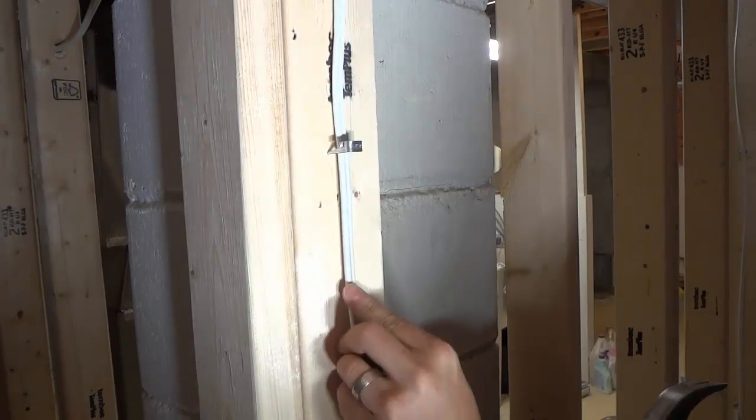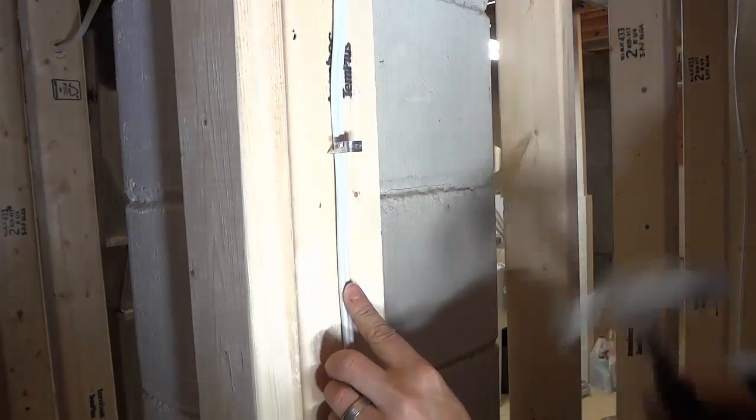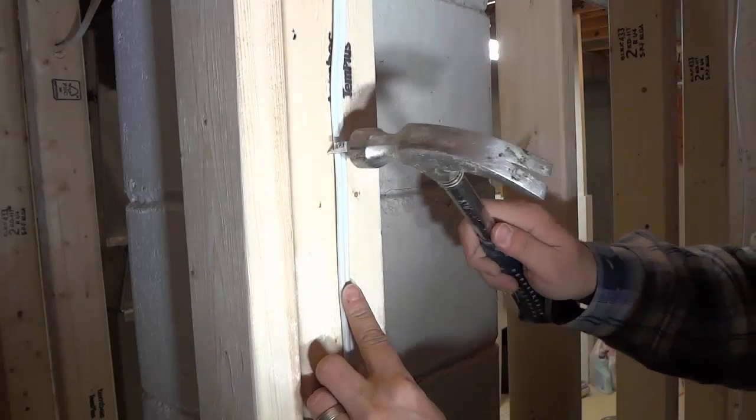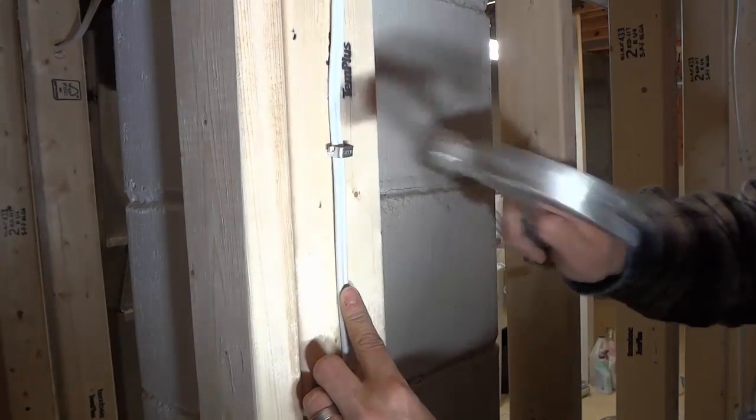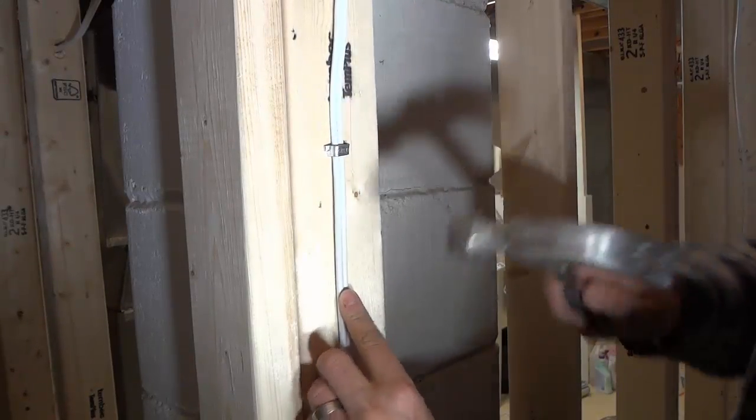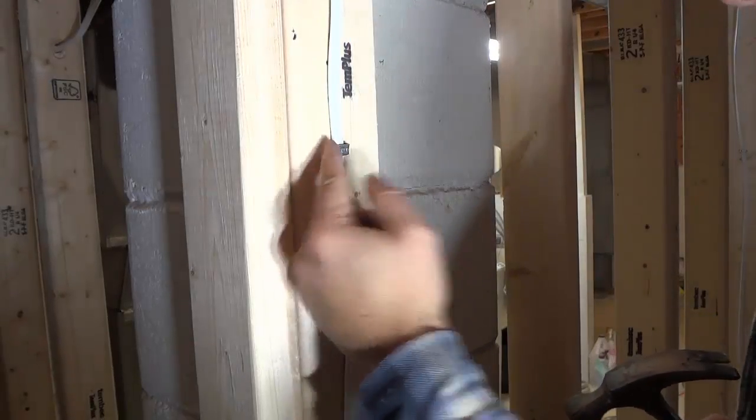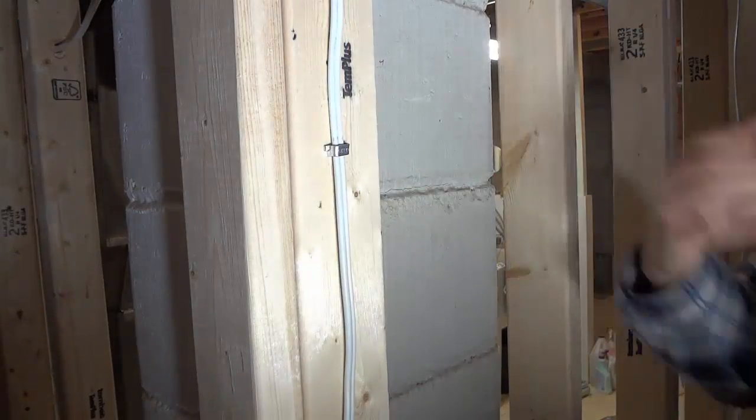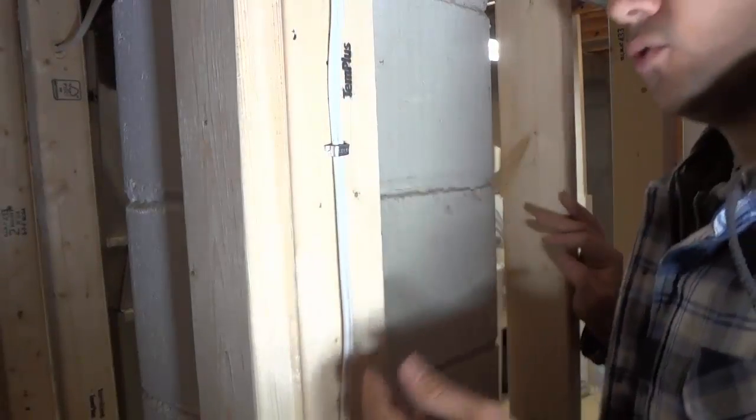As you can see the wire can still move freely but the staple is being held in place. Now you're going to take your hammer and you're going to hammer it down just like that into place. Now those tabs on the side of the staple will prevent you from over hammering it too far down into the wood.